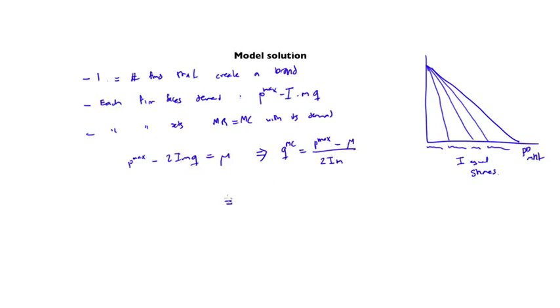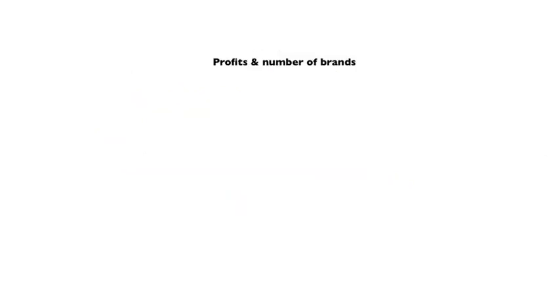This also implies that the total quantity that is produced, which is just I times QMC, equals Pmax minus mu divided by 2M. Notice that this is equal to the quantity that would be produced if one single firm would be a monopolist in this market. This also implies, substituting back into the aggregate demand function, that the price in monopolistic competition equals the price in monopoly, which equals Pmax divided by 2 plus mu divided by 2.